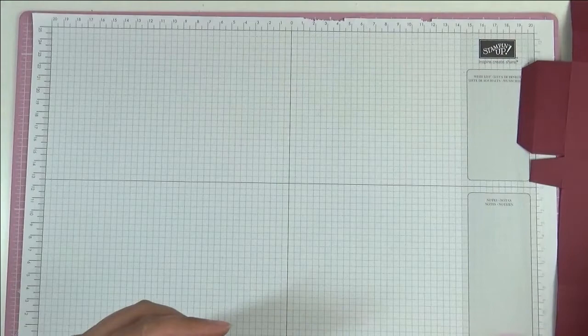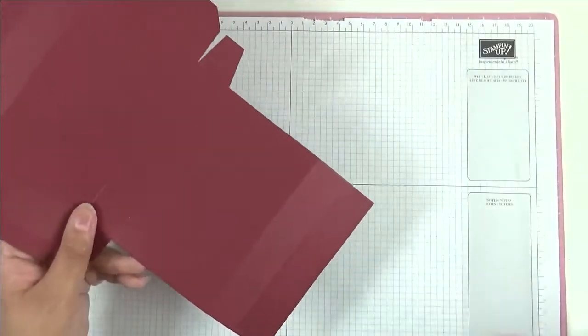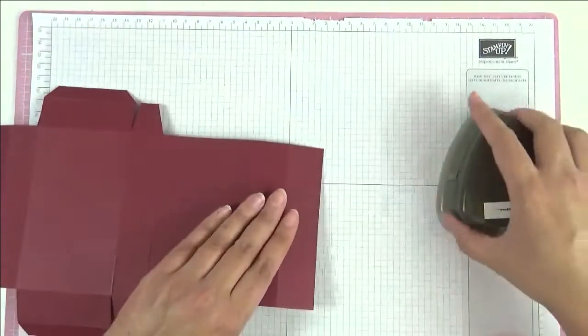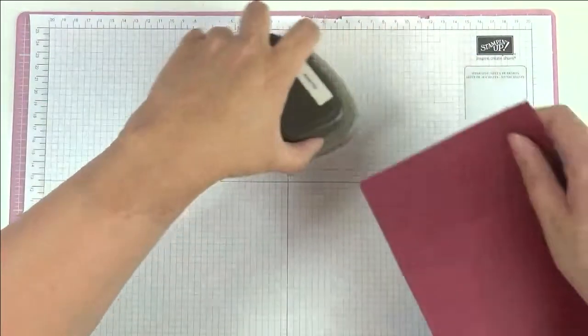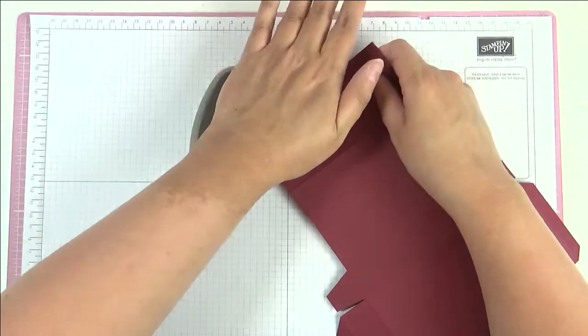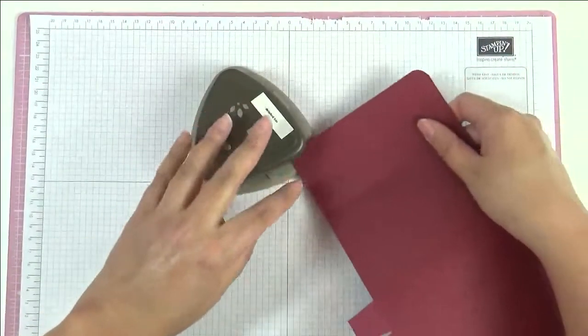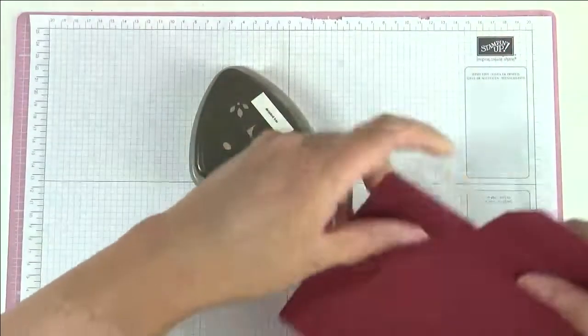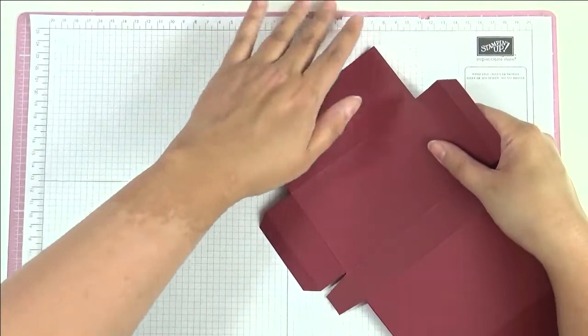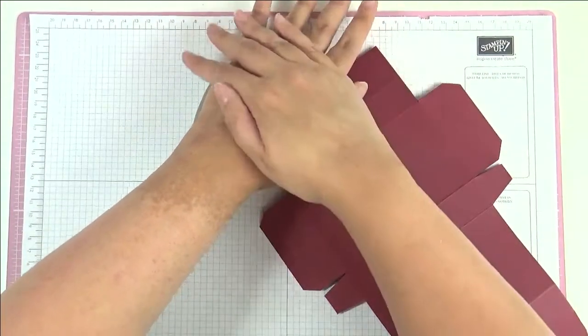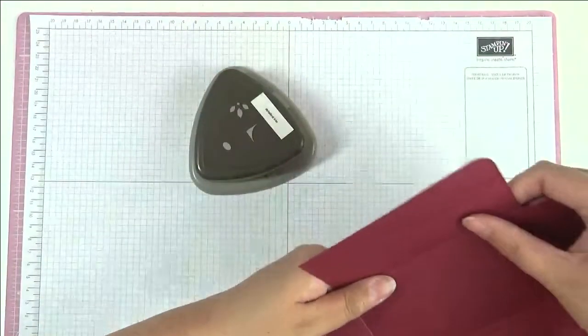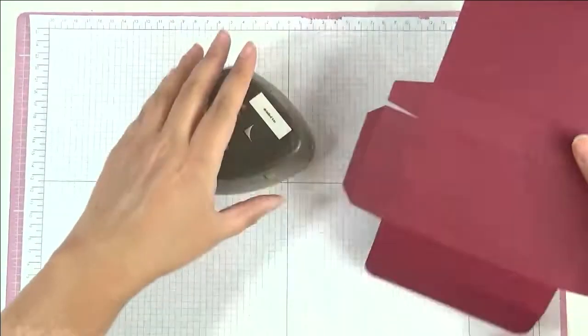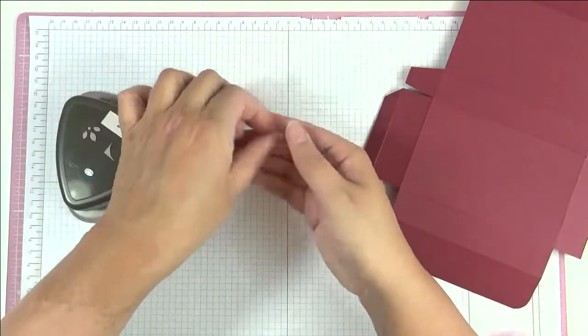Next thing we're going to do is I want to round the corners, these two little outer tabs here. So I'm going to bring my detailed trio punch and just round these corners. This just makes things look a bit more professional and it does help everything fold together more easily. Get rid of those little pieces.